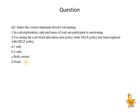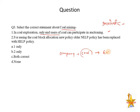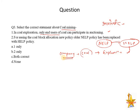Next is a very important current affairs topic — coal mining. There are high chances of a coal mining question appearing in this exam. The first statement says that in coal exploration, only end users of coal can participate in auctioning. This was true before the Atma Nirbhar scheme. Earlier, only end-user companies — those dealing exclusively in coal — could participate. When NELP (New Exploration Licensing Policy) was replaced by HELP (Hydrocarbon Exploration License Policy), participation was freed up, but still limited to end-user companies.